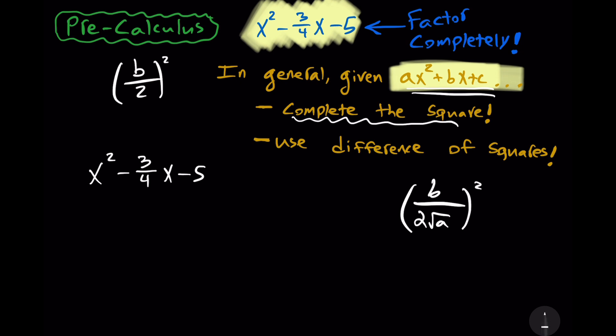So, on the one hand, let's add that. So, plus minus 3 over 4 divided by 2, and that quantity is squared. But, because we don't want to radically alter our expression, we better also subtract that. So, minus minus 3 over 4 over 2, that quantity squared.